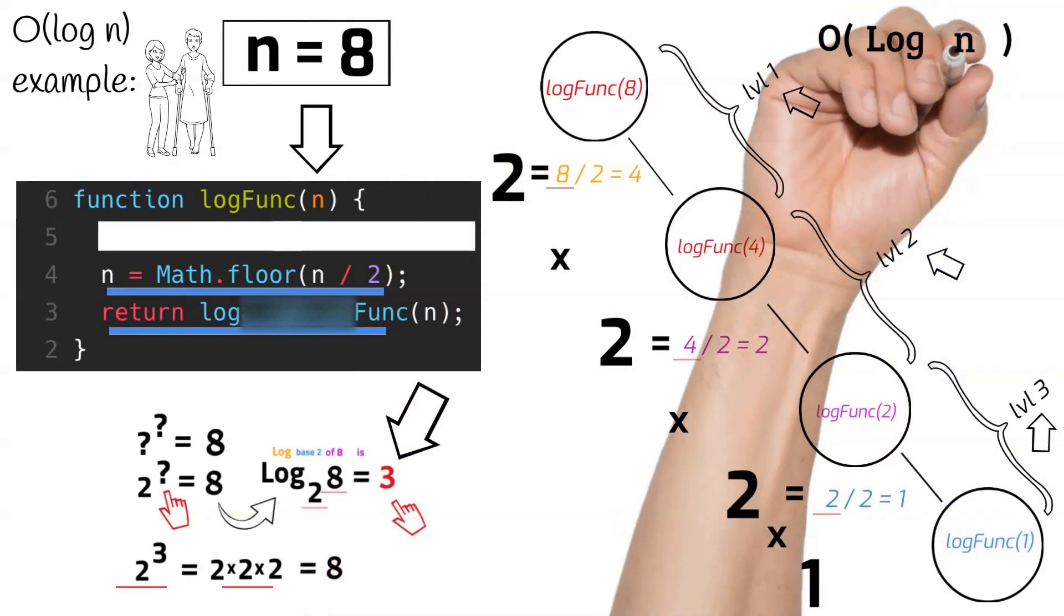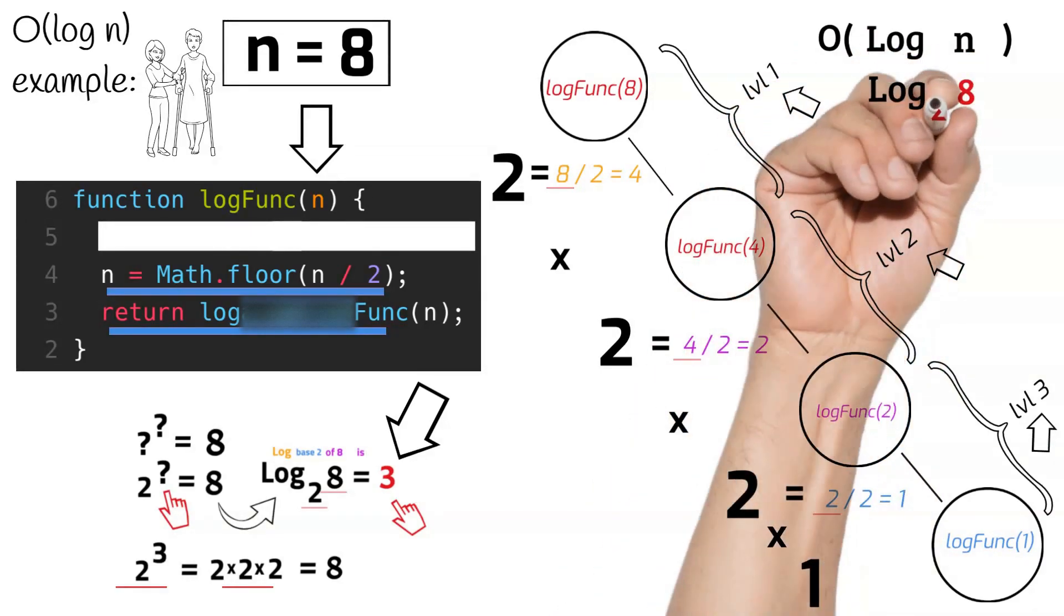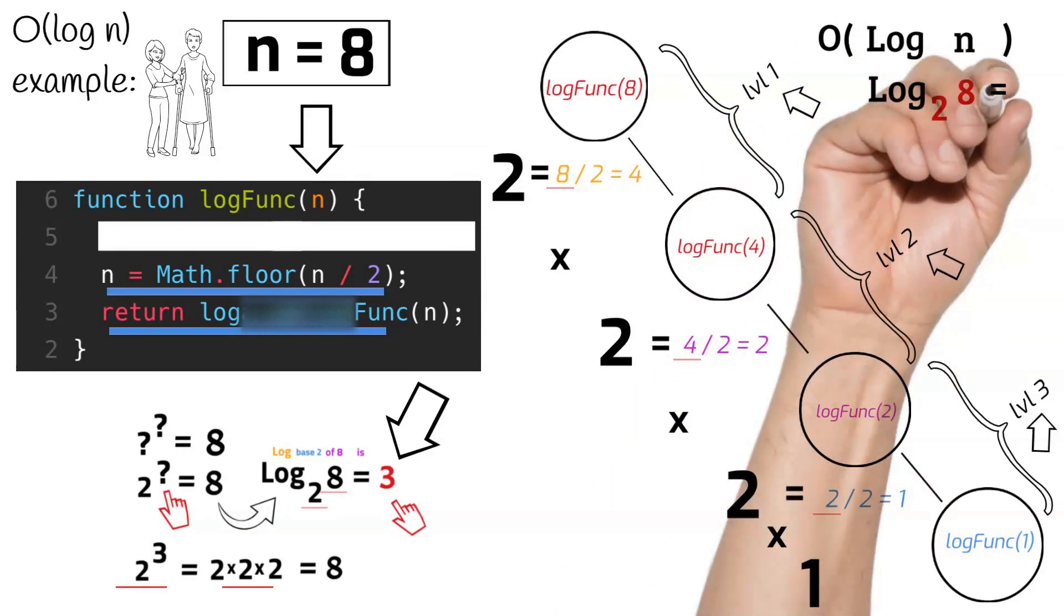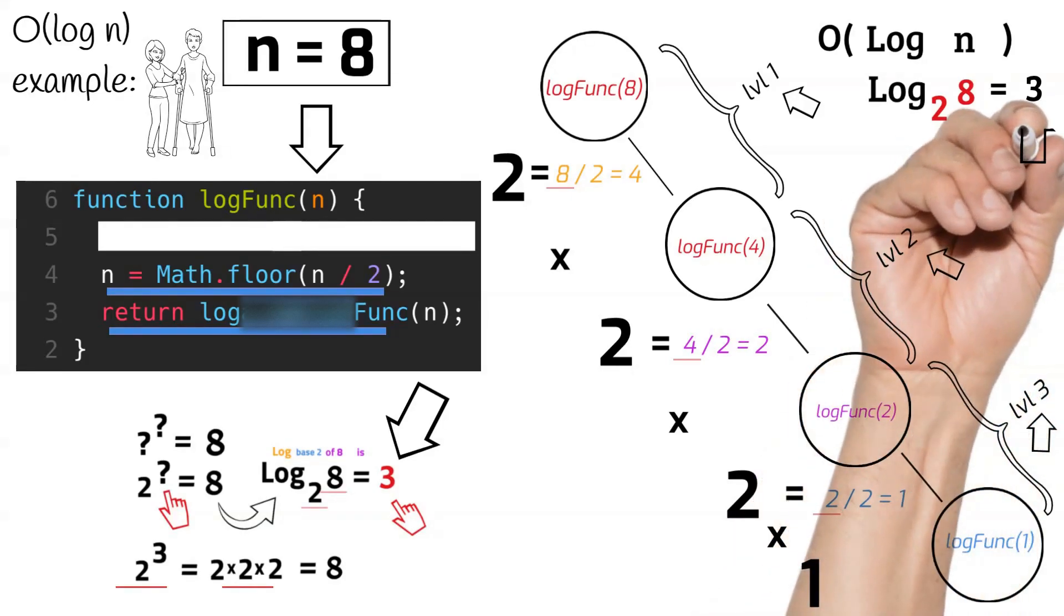Why? Because our n is 8, and in computer science, our base is always 2. And we must halve our n three times or go three levels deep in our recursive function to get to a point where we can no longer reasonably halve our input n. Which is another way of saying that log base 2 of 8 equals 3.